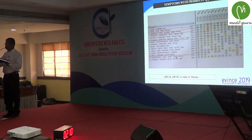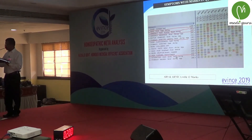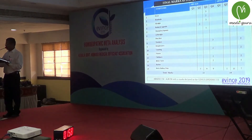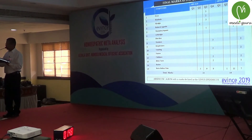Symptoms with marks in Q3 and Q2 showed two medicines emerging — Arsenicum and Arnica — with equal marks of 12 each. Considering Q4 and total marks, Arsenicum stood with 21 marks and Arnica with 19 marks. Therefore, Arsenicum album with 21 marks was declared as the Genus Epidemicus.